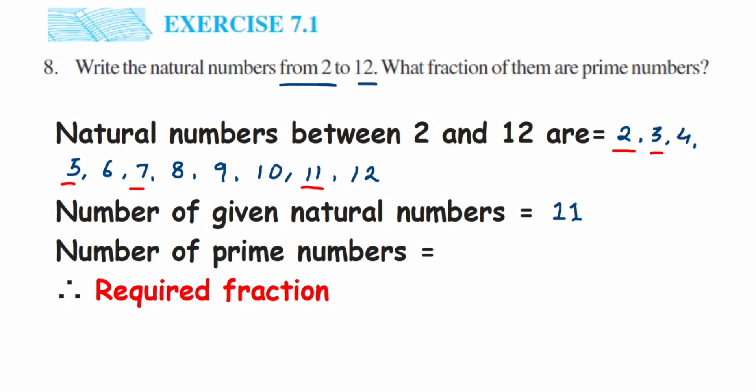So the prime numbers will be here 2, 3, 5, 7, and 11. Total 5 prime numbers we got between them. So number of prime numbers will be here 5.